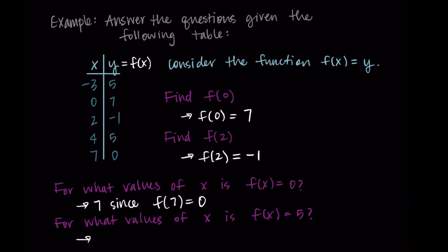We repeat this again, we say for what values of x is f of x equal to five. So here five is a y value or an output, I'm noticing that it shows up twice. So we have five listed twice. And so this means we're going to have two solutions, since both negative three and four map to five. So we would say negative three and four. And that's because f of negative three equals five, and f of four equals five.